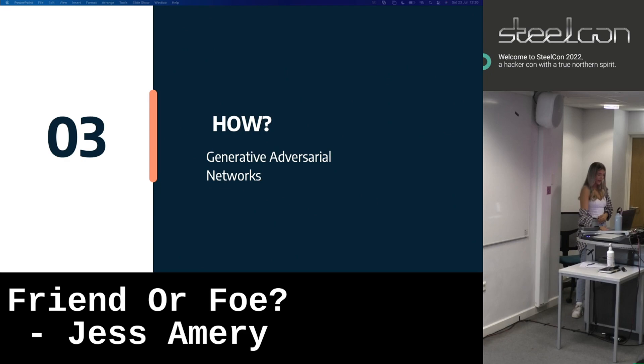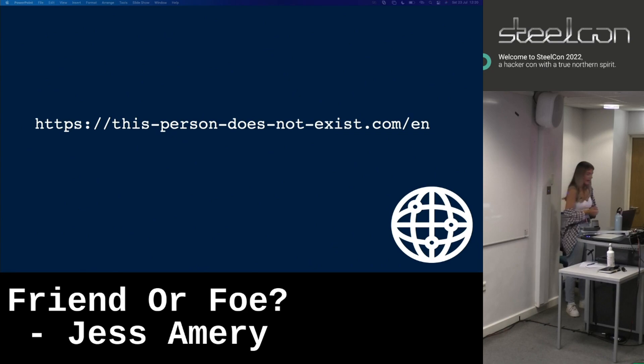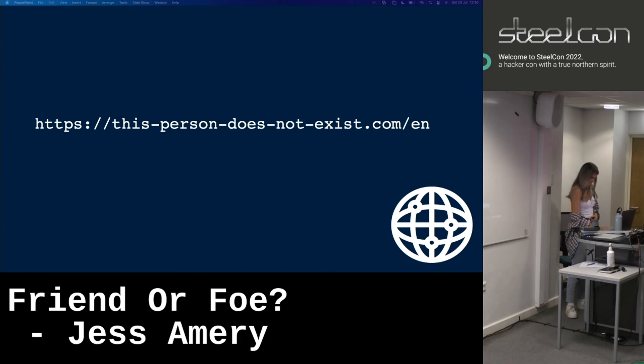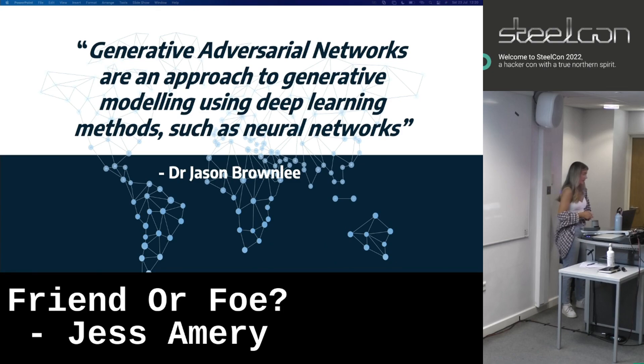For those who aren't aware, browse to thispersondoesnotexist.com — you can generate a realistic face with the click of a button. This site is powered by an algorithm known as StyleGAN. So what is StyleGAN? What is a generative adversarial network? Dr. Jason Brownlee — a very smart man with a PhD who does a lot of open-source writing about machine learning — once said that generative adversarial networks are an approach to generative modeling using deep learning methods such as neural networks.